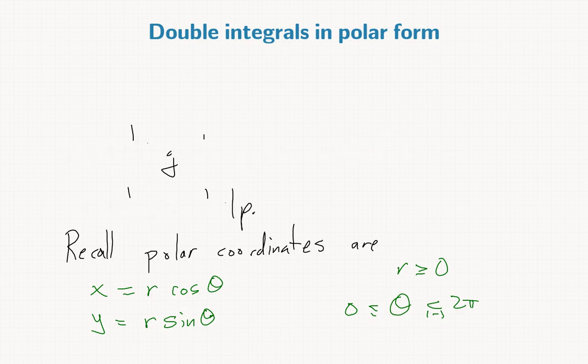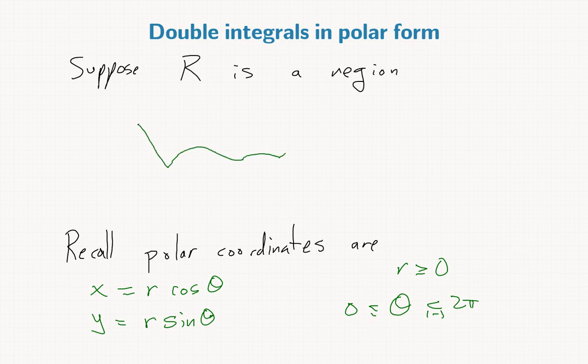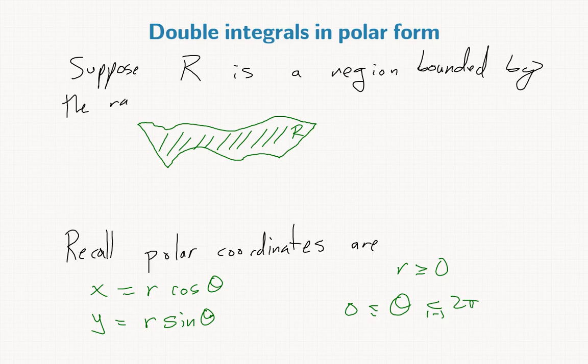Suppose R is a region. Here's a picture of R. It'll be bounded by the rays theta equals alpha and theta equals beta.